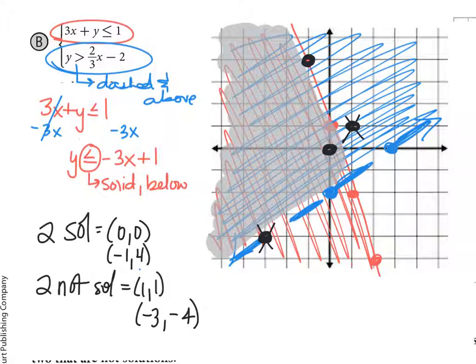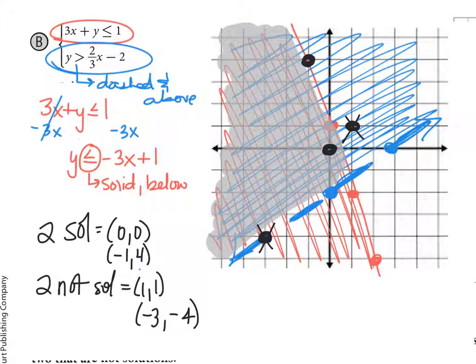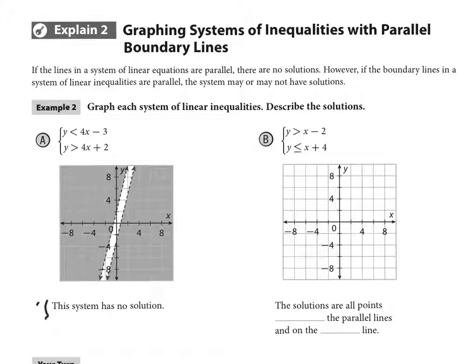Alright, make sure you picked up on all the parts of that example. Okay, so the second and last example are when we talk about parallel lines. Now you're used to parallel lines always having no solution. But when we talk about shading and inequalities, it may or may not have no solution. So we just have to see what it looks like.